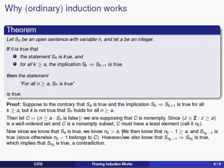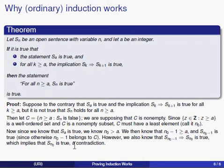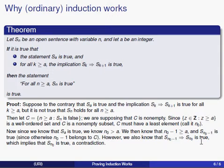Because we're assuming S(a) is true, n₀ cannot be a—it must be bigger than a. That means n₀ − 1 is at least a. But S(n₀ − 1) must be true, since n₀ was the smallest number for which S(n) was false. Knowing S(n₀ − 1) is true, and that S(n₀ − 1) implies S(n₀) is true, tells us that S(n₀) must be true as well.